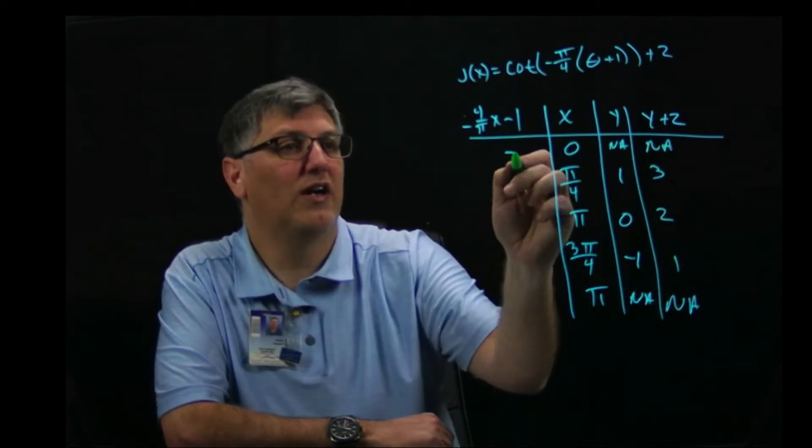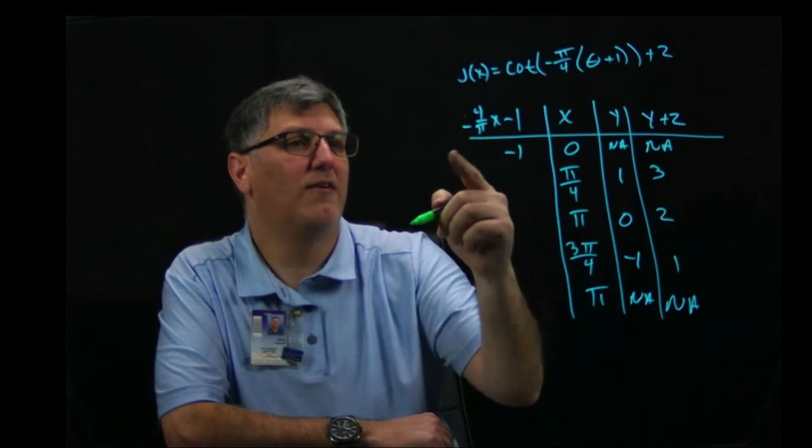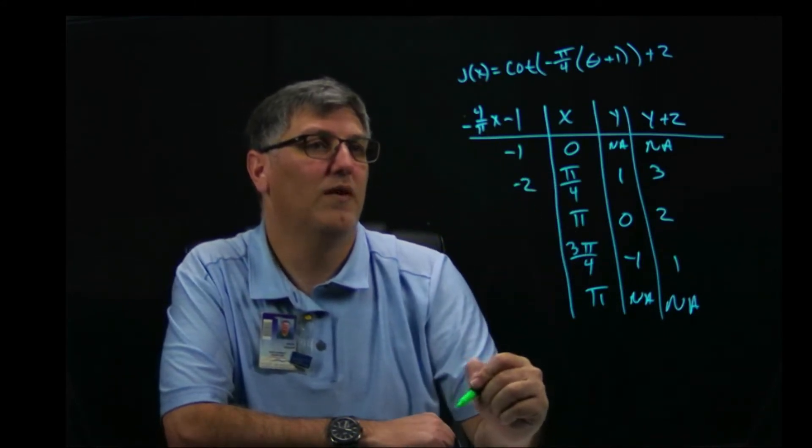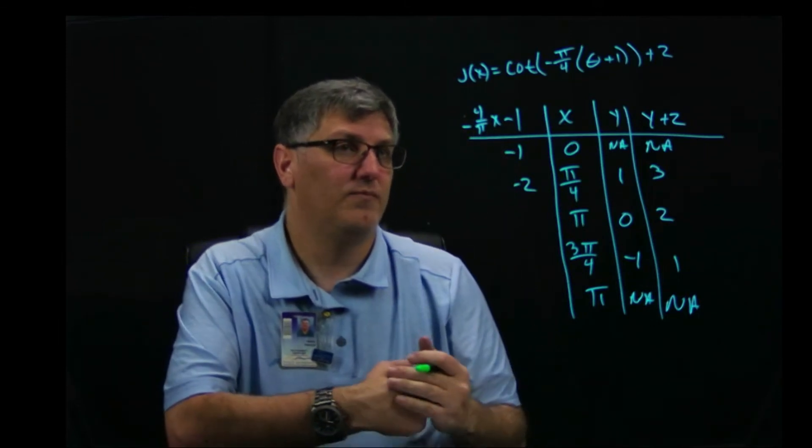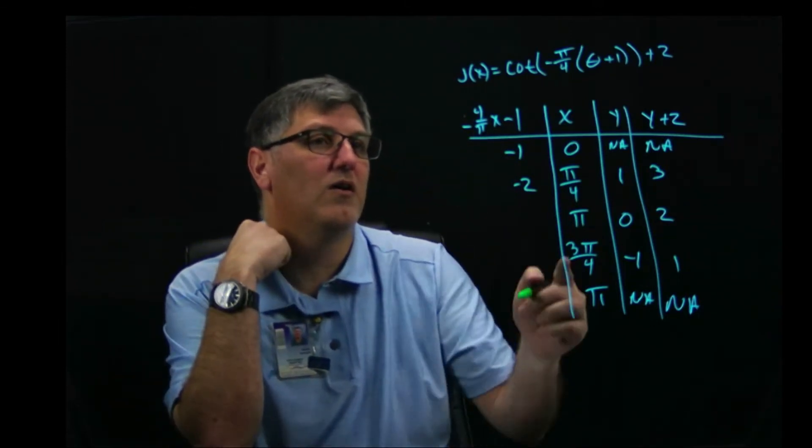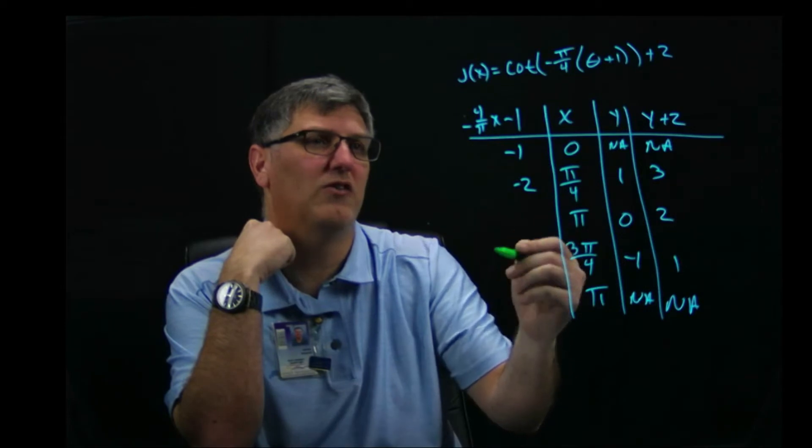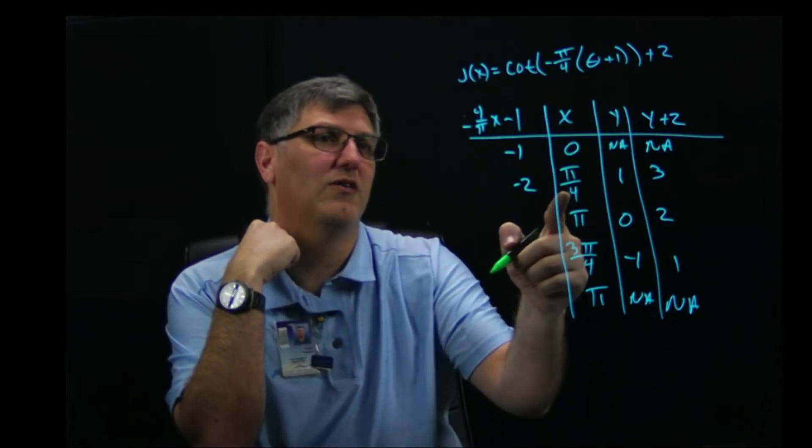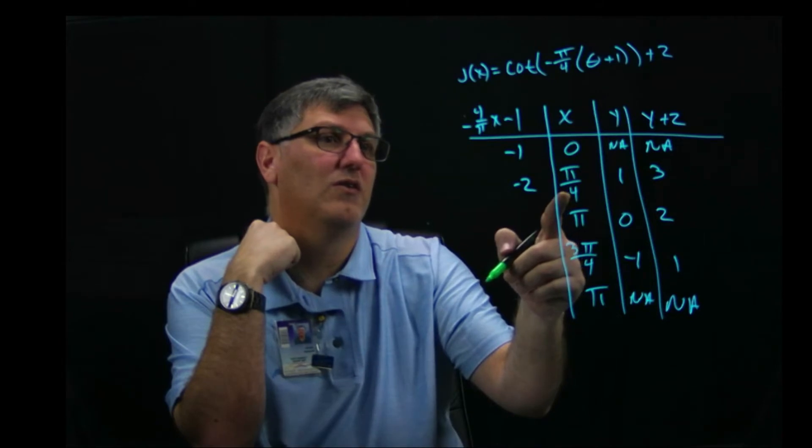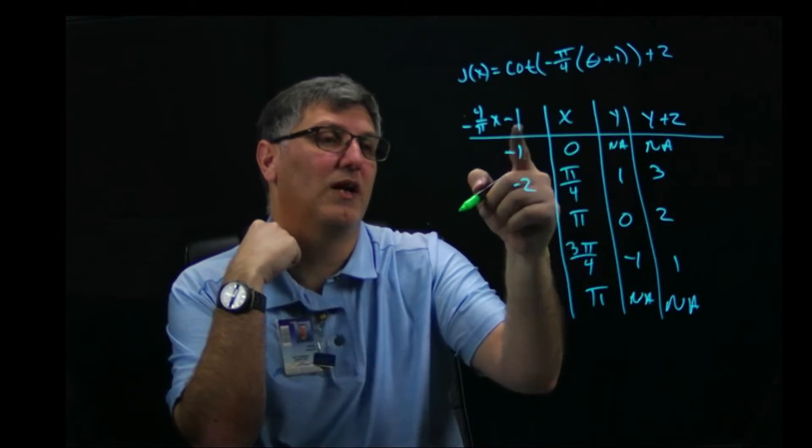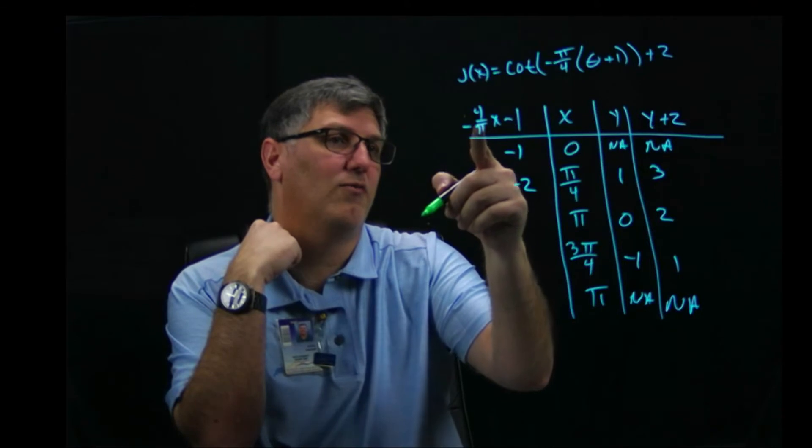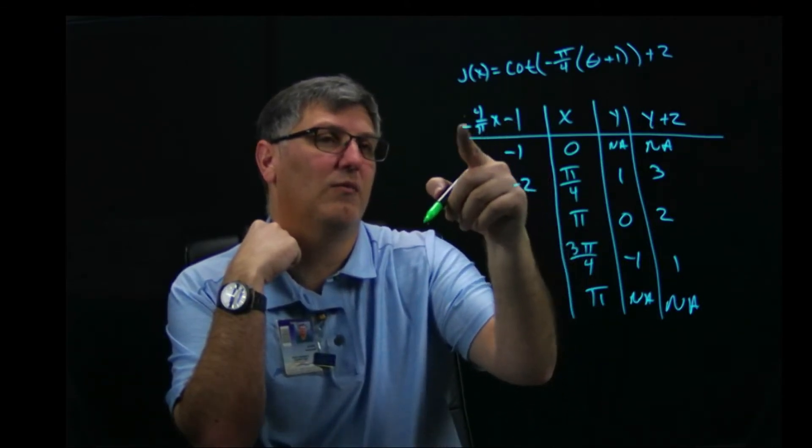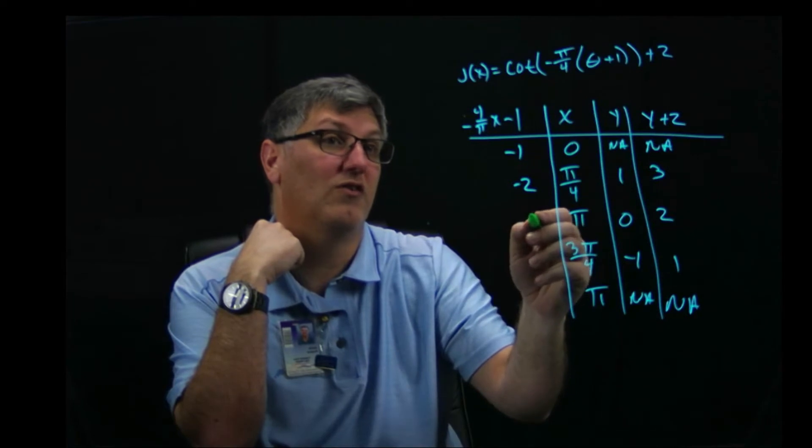We plug zero in here, I get negative one. If I plug pi over four in here, I got negative one minus one, which is negative two. If I put pi in here, let's see, that gives me negative four minus one is minus five. I did something wrong here.